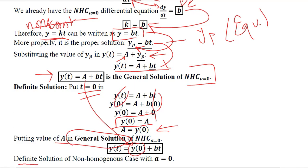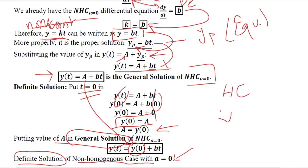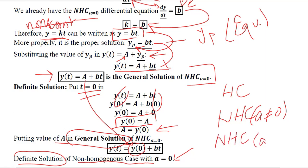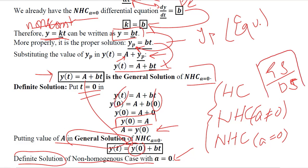This definite solution is the solution for the non-homogeneous case of the first order differential equation where a equals 0. We have now found the general and definite solutions for all three cases: the homogeneous case, the non-homogeneous case with a not equal to 0, and the non-homogeneous case where a equals 0. We are now in a position to solve various first order differential equations using these three formulas, whichever fits the situation.